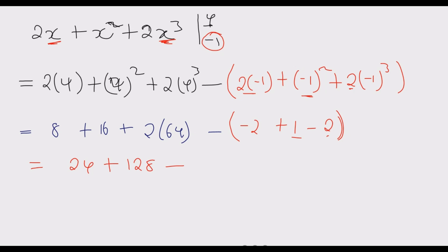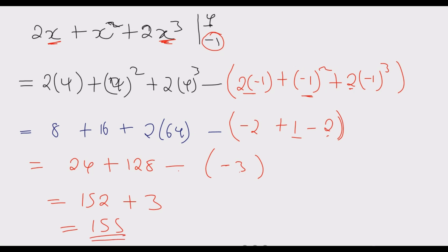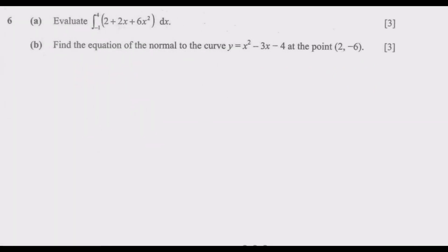Adding the first bracket: 8 plus 16 plus 128 gives 152. The second bracket: negative 2 plus 1 minus 2 gives negative 3. Then 152 minus negative 3 is 152 plus 3, which gives us 155 as our final answer for this question.